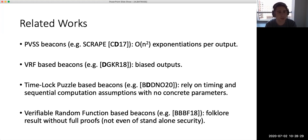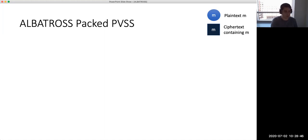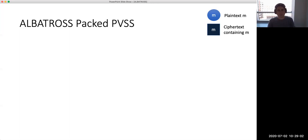So basically we depart from a situation where we either have seemingly efficient beacons with timing assumptions no one knows how to instantiate, easily biasable beacons based on VRFs, or beacons with uniformly random outputs but at a very high cost to generate only one random output. We move to a setting with a very nice amortized complexity for all the randomness we generate. The way we do it is that instead of doing PVSS as in SCRAPE, we use packed verifiable secret sharing — meaning that instead of sharing only one element, we can share a vector while using basically the same amount of communication, though with a lower corruption threshold.